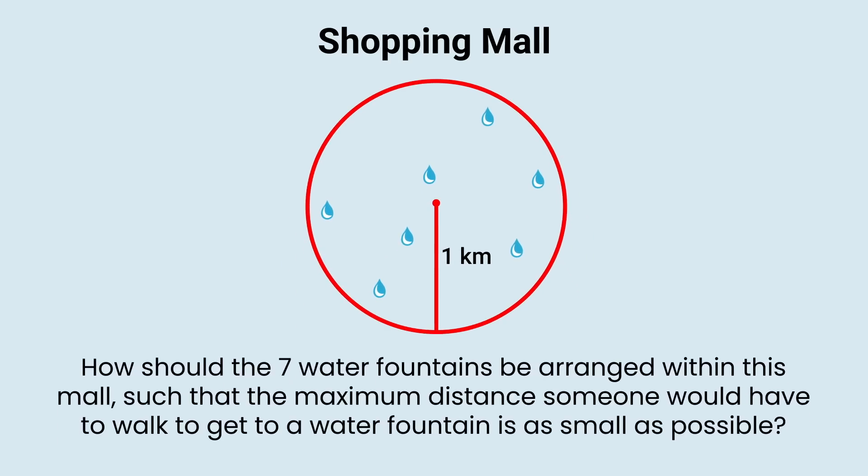Imagine we have a shopping mall built in the shape of a perfect disc with a 1 kilometer radius. In this mall there will be 7 different water fountains installed. And the question is, how should the 7 water fountains be arranged within this mall such that the maximum distance someone would have to walk to get to a water fountain is as small as possible?